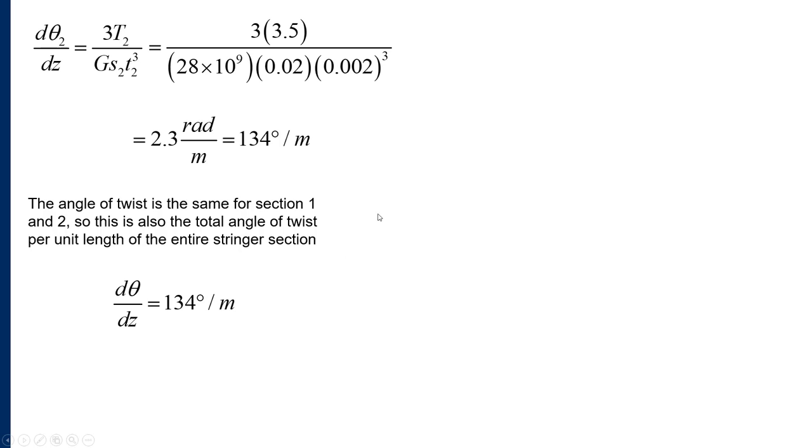Now the angle of twist is the same for section 1 and section 2. This was our compatibility equation and it's actually also equal to the angle of twist for the entire section. So the entire angle of twist d𝜃/dz is 134 degrees per meter, and this is 37 percent of a full revolution per meter.